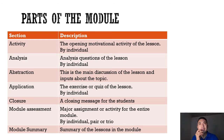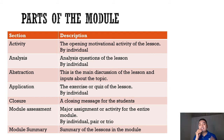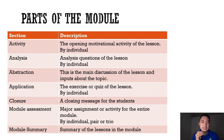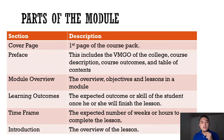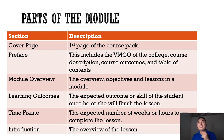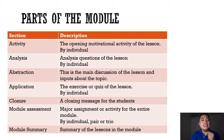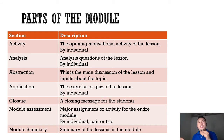For the module assessment, I will give you the freedom to choose whether to work individually, by pair, or by trio. The Module Summary is just a summary of all the lessons — similar to a book summary of the entire discussion. So to recap, the parts of the module are: cover page, preface, module overview, learning outcomes, time frame, introduction, activity, analysis, abstraction, application, closure, module assessment, and module summary.